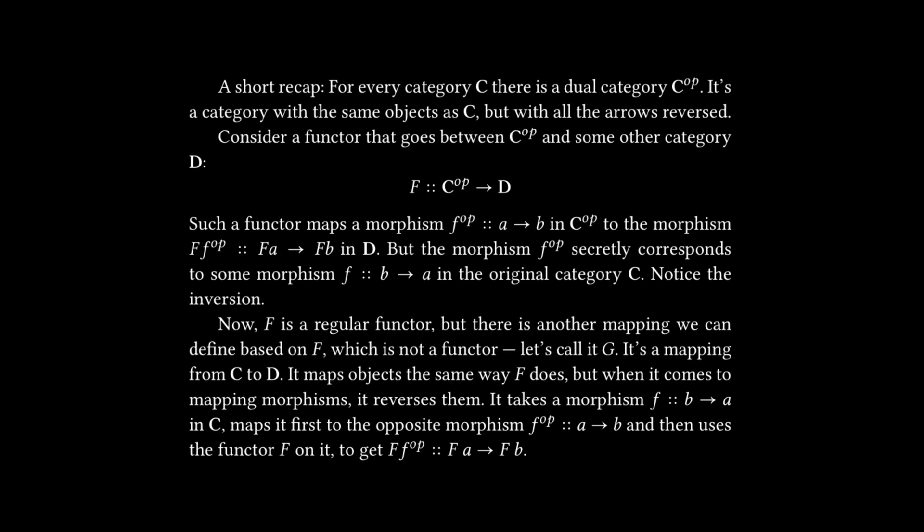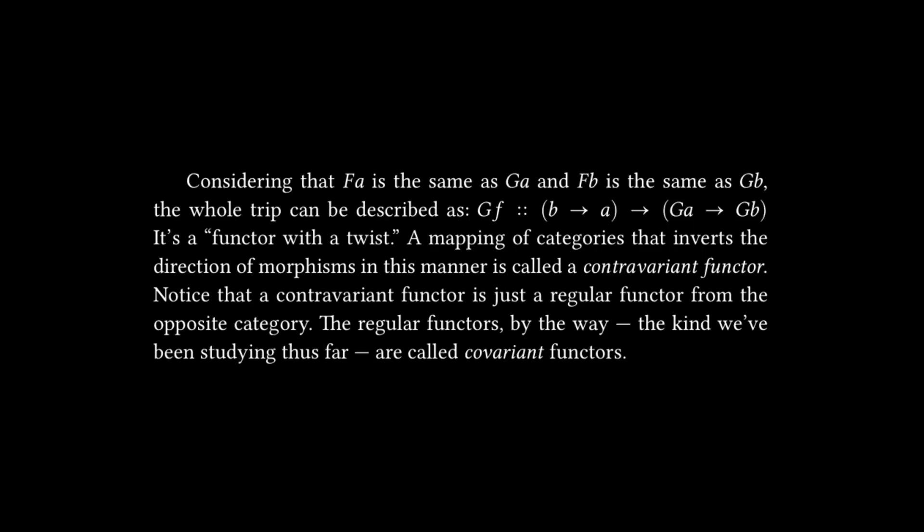Moving on to covariant and contravariant functors, I'm going to put this up on the screen, but I'm not going to read through it. It's just the precursor to what's going to come next, where the text states: considering that fa is the same as ga and fb is the same as gb, the whole trip can be described as gf from b to a with an arrow and then ga to gb. It's a functor with a twist, a mapping of categories that inverts the direction of morphisms in this manner is called a contravariant functor. Notice that a contravariant functor is just a regular functor from the opposite category. The regular functors, by the way, the kind we've been studying thus far are called covariant functors.